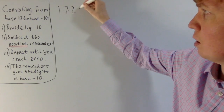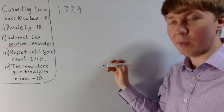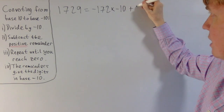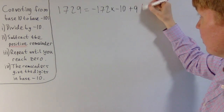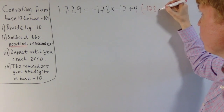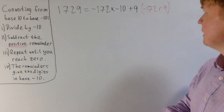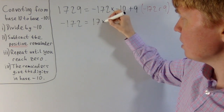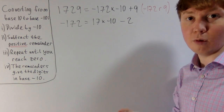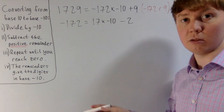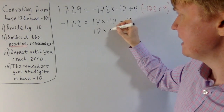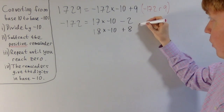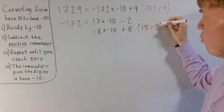So if we start with 1,729 and convert this into base minus 10, first we divide by minus 10: we can write this as minus 172 times minus 10 plus 9. So our remainder is 9, meaning 1729 divided by minus 10 gives minus 172 remainder 9. This 9 is our ones digit. Now we take minus 172 and divide by minus 10. We might be tempted to write it as 17 times minus 10 take away 2, but that gives a negative remainder. So instead we use 18 times minus 10 plus 8, giving us minus 172 divided by minus 10 equals 18 remainder 8.